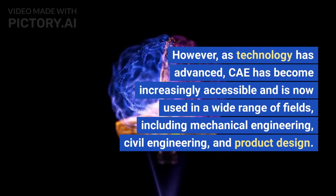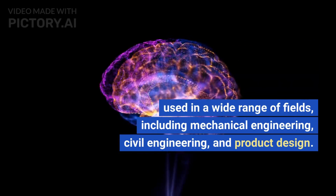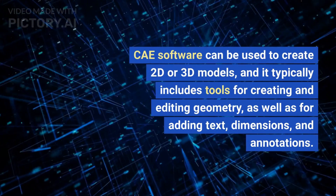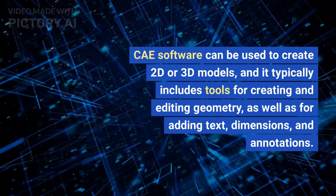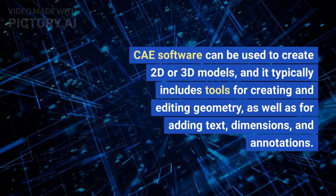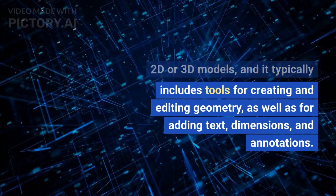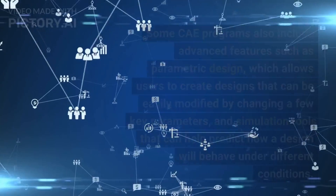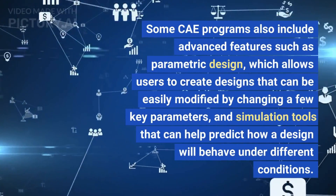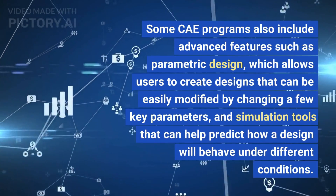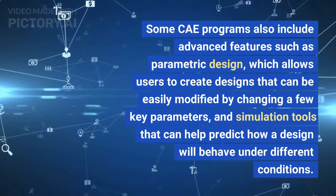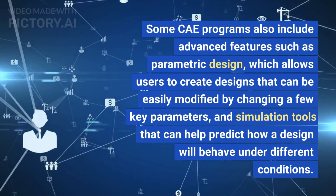CAE software can be used to create 2D or 3D models, and it typically includes tools for creating and editing geometry, as well as for adding text, dimensions, and annotations. Some CAE programs also include advanced features such as parametric design, which allows users to create designs that can be easily modified by changing a few key parameters, and simulation tools that can help predict how a design will behave under different conditions.